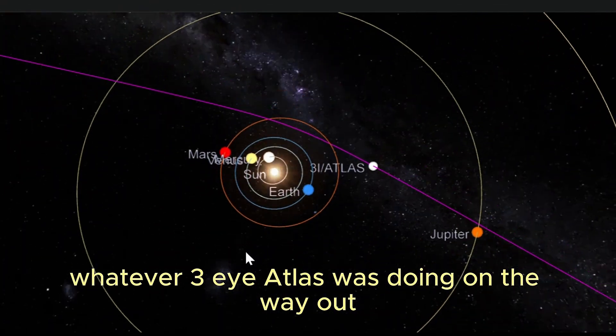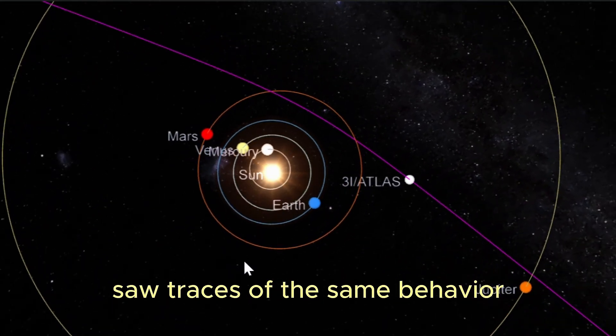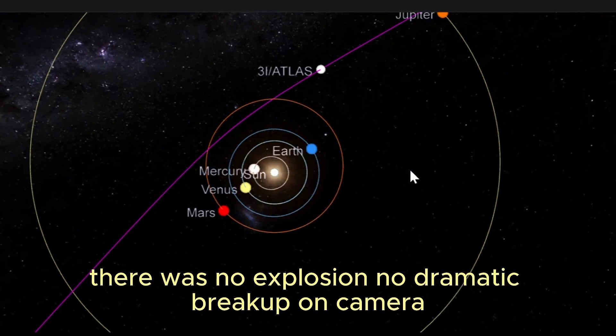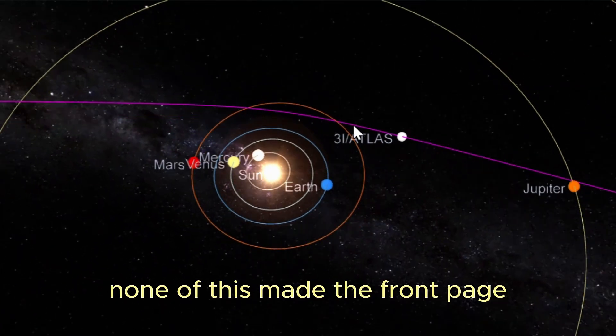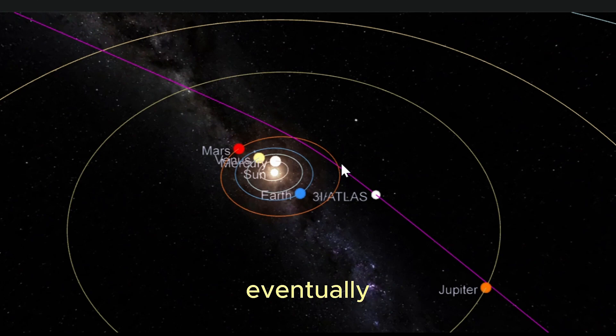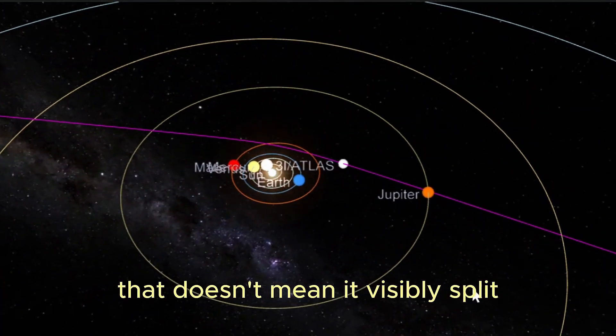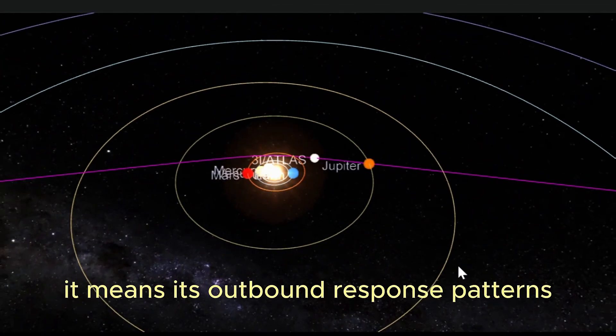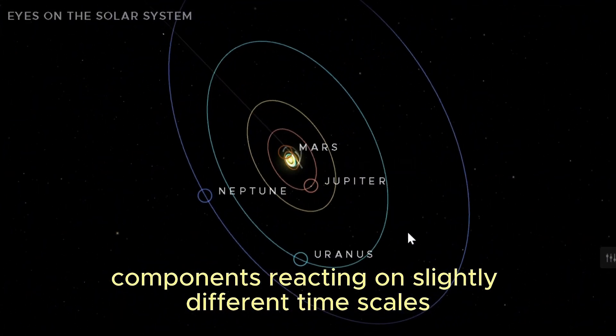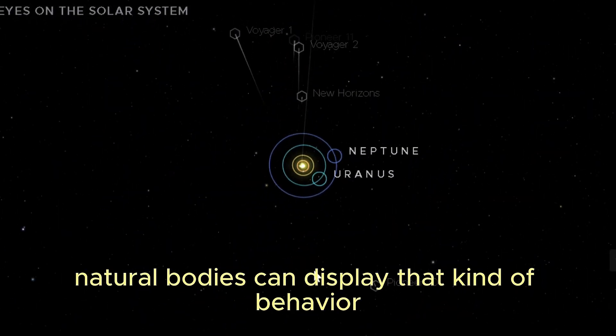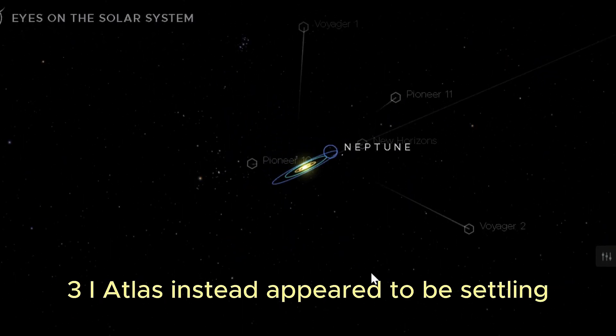Whatever 3I Atlas was doing on the way out, it appeared to be doing it consistently enough that multiple observers saw traces of the same behavior. Equally telling is what didn't happen. There was no explosion, no dramatic breakup on camera, no spectacular transformation. And that is precisely why none of this made the front page. The change was subtle but systemic. Eventually, analysts reached a point where treating 3I Atlas as a single-body object simply stopped working. That doesn't mean it visibly split. It means its outbound response patterns looked more like those of an internally differentiated system: components reacting on slightly different timescales, yet still coordinated.